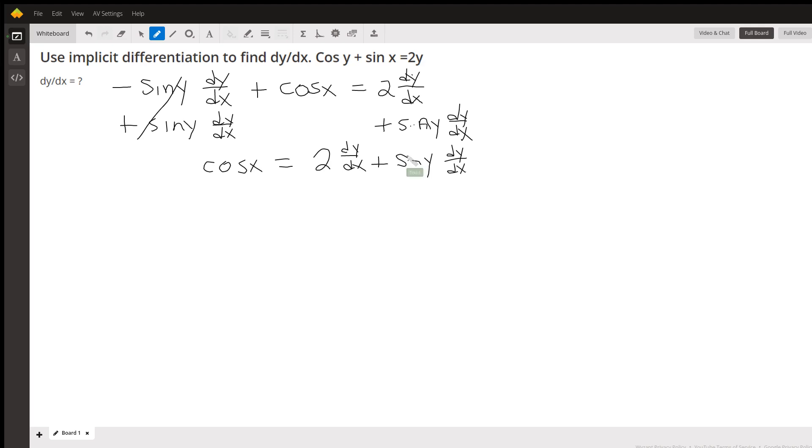I'm going to factor out dy dx on the right. When I factor dy dx out, I would be left with dy dx times 2 plus sine of y.